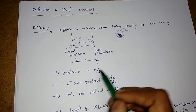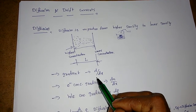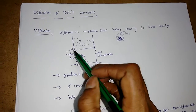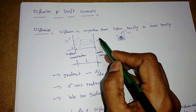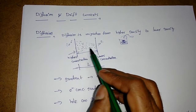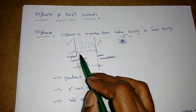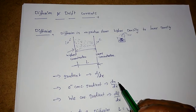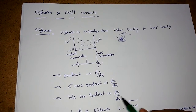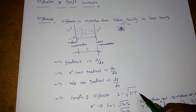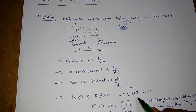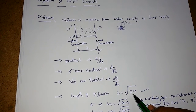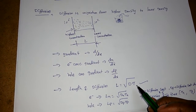When diffusion is happening, there will be a concentration gradient d/dx. The electron concentration gradient is dn/dx and the hole concentration gradient is dp/dx. For example, if one end has 10^6 and the other has 10^2, the gradient is (10^6 − 10^2) / dx. The diffusion length formula is L = √(D × τ), which can be used directly if a diffusion constant and carrier lifetime are given.